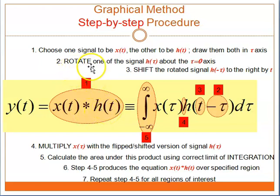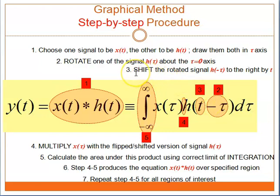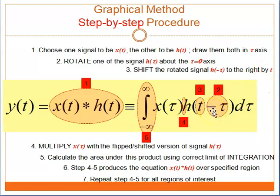Second step: rotate one of the signals Ht about the tau equals 0 axis. So your Ht has now become H minus tau. Third procedure: shift the rotated signal H minus tau to the right by T, so your H minus tau has now become Ht minus tau.